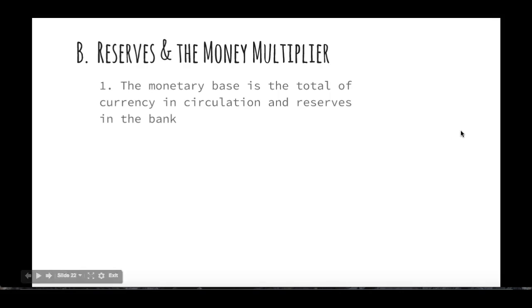The first thing you have to understand is that when we're looking at money, there's a difference between the money supply and what we call the monetary base. The monetary base is the total currency in circulation and the reserves in the bank. The currency in circulation is the actual cash that's out there, and the reserves in the bank is the money that the bank has that they can claim as assets — that could be required reserves or excess reserves.